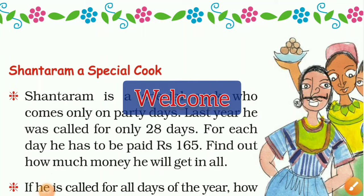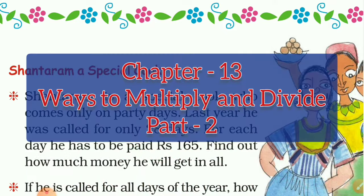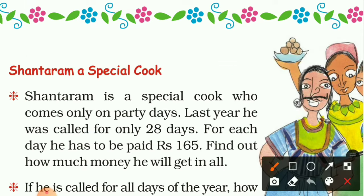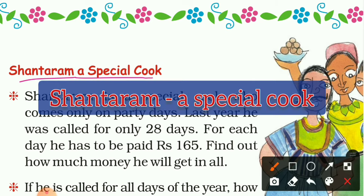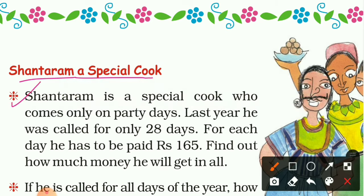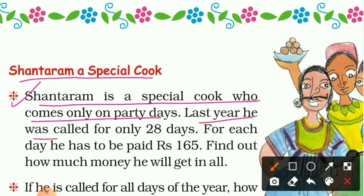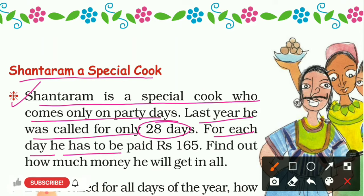Hello dear students and welcome back to this online class video. This is the second part of Chapter 13, 'Ways to Multiply and Divide,' of Class 5 Mathematics. I am Jay Prakash. Today's topic is 'Shantaram, a Special Cook.' Here is a word problem: Shantaram is a special cook who comes only on party days. Last year he was called for 28 days, and for each day he has to be paid 165 rupees.